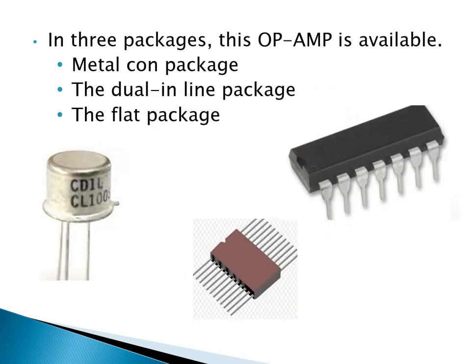Next, the package. The operational amplifier is available in three packages in the market: first, the metal can package; second, the dual inline package; and third, the flat top package. The diagrams shown denote these three different kinds of packages.